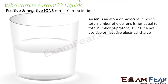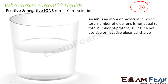Now what happens in case of liquids? In liquids, positive and negative ions carry currents. Ions are something in which the total number of electrons is not equal to the total number of protons. When you look at the structure of the atom, an atom has a nucleus which has protons and neutrons, and it has electrons revolving around it. Protons are positively charged and electrons are negatively charged, and neutrons are neutral. When the number of protons is equal to the number of electrons, the net charge on the atom is zero.